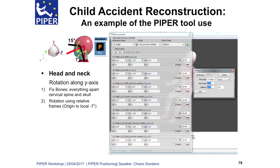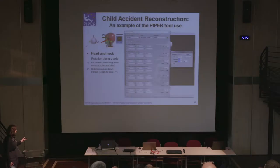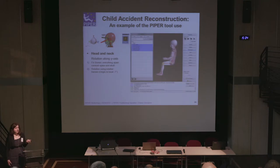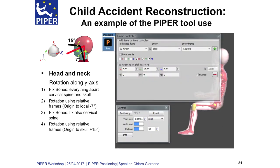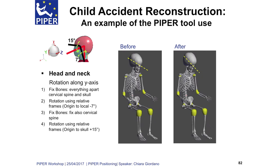I generate a frame for each of the vertebrae to keep the relative angles between each vertebra. What I am doing is a rotation along the Y-axis with respect to the global frame, with the cervical spine treated as if it were a rigid body. After that, I fix the cervical spine as well, then click once again on frame and move the skull — a counter-clockwise rotation of the head of 15 degrees — to position the head. Here you see before and after, and you can see that the head is in a slightly different position. It is a small range of motion: 7 and 5 degrees.